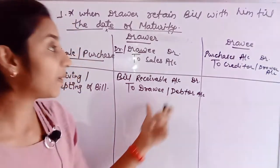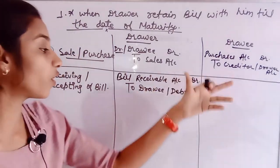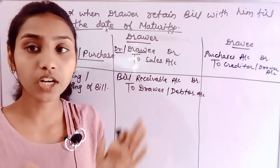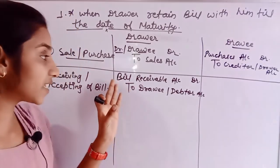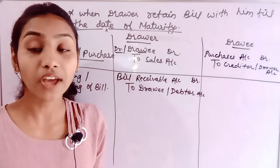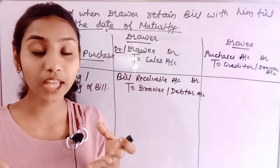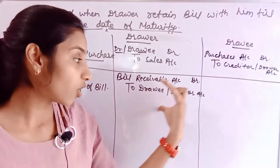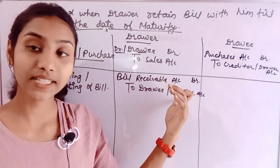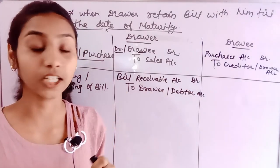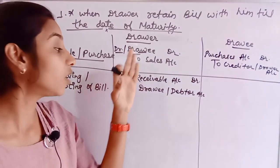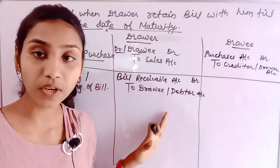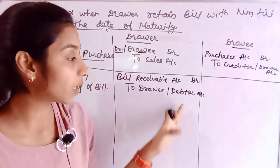Under the modern rule, the bill receivable is an asset. If it is increased, we debit it. The drawee was our asset — a debtor. When the debtor is replaced by the bill receivable, the debtor is reduced so we credit it. So: Bills Receivable Account Debit to Drawee Account — because the bill receivable increases as an asset and the debtor decreases.